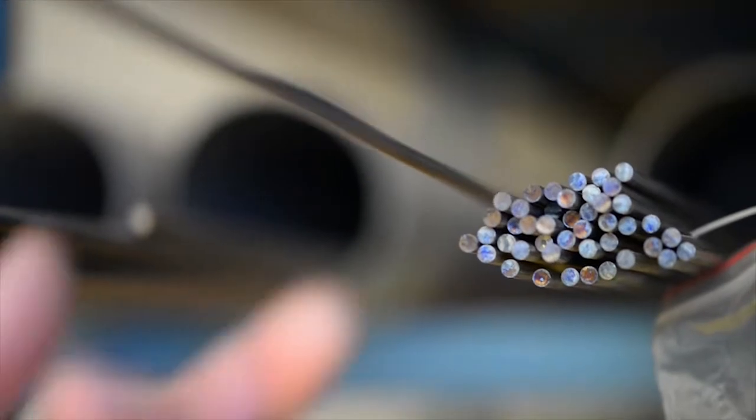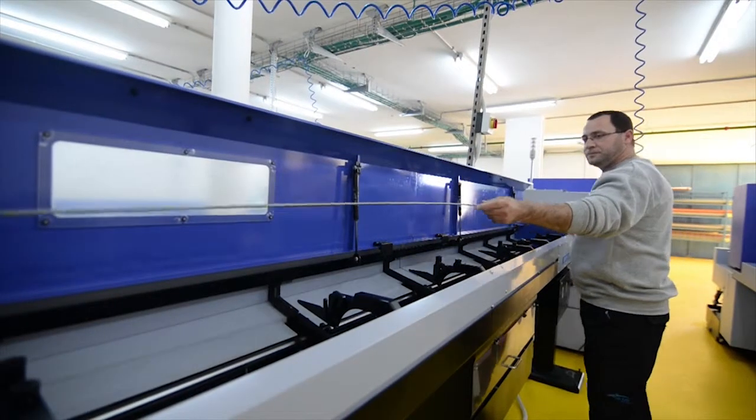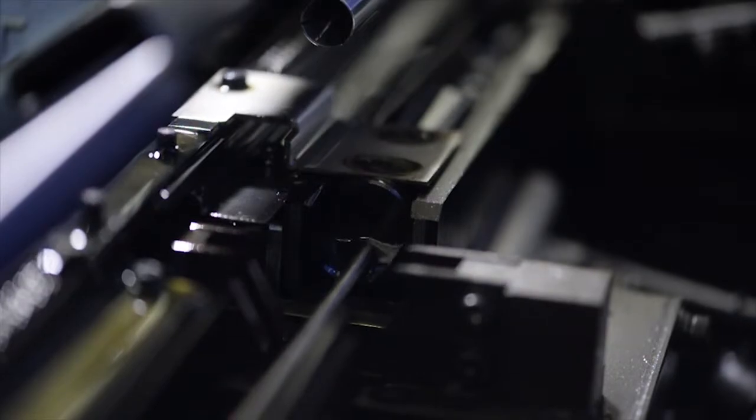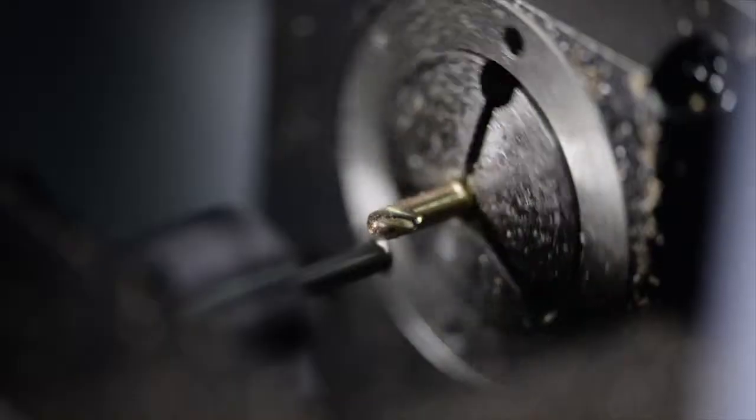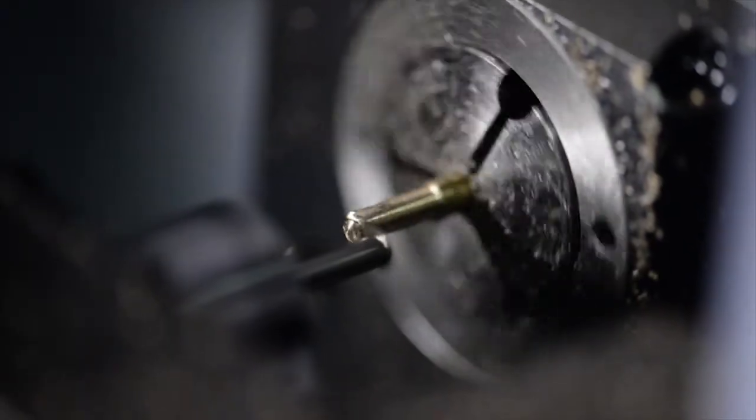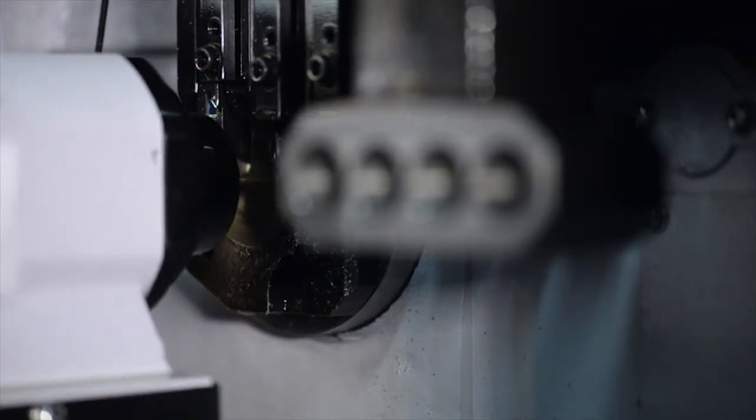Dental implant production at Alphagate starts with titanium bars that are first cut into pegs of various lengths. Then a high-precision CNC machine creates the threading on one side.